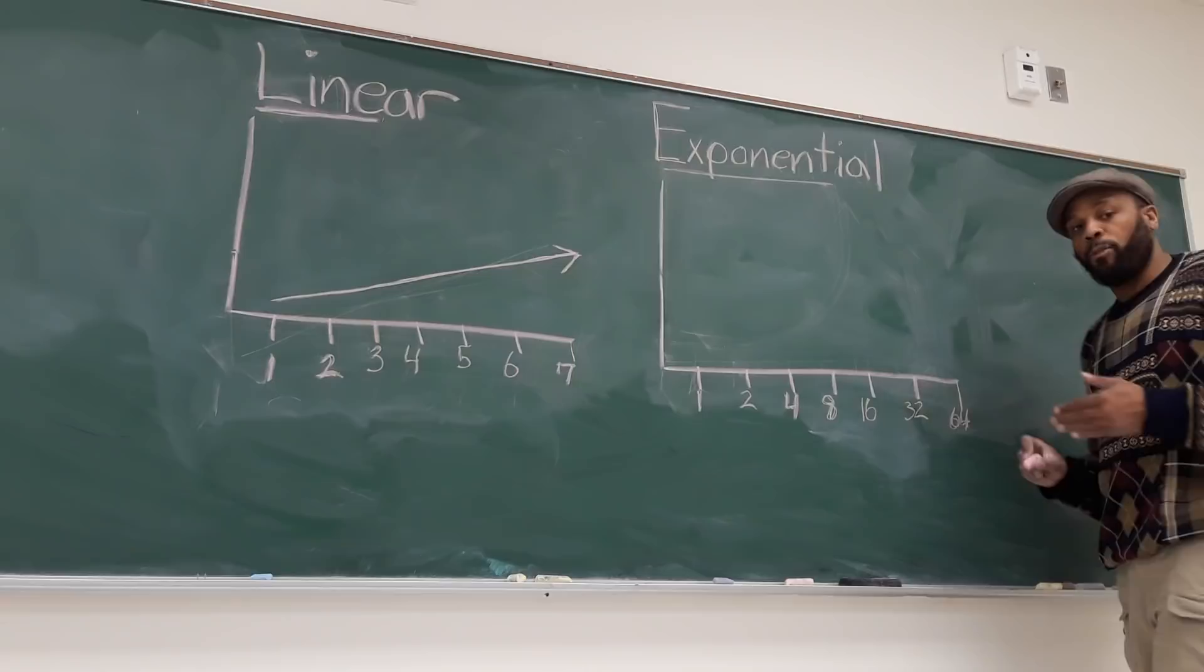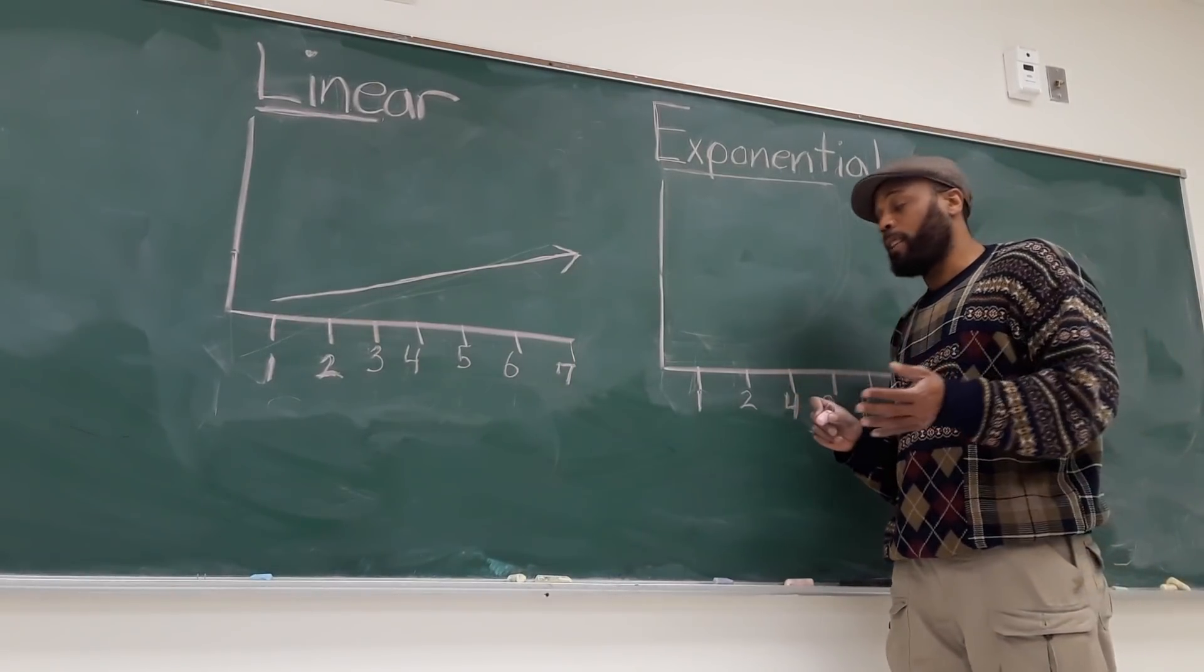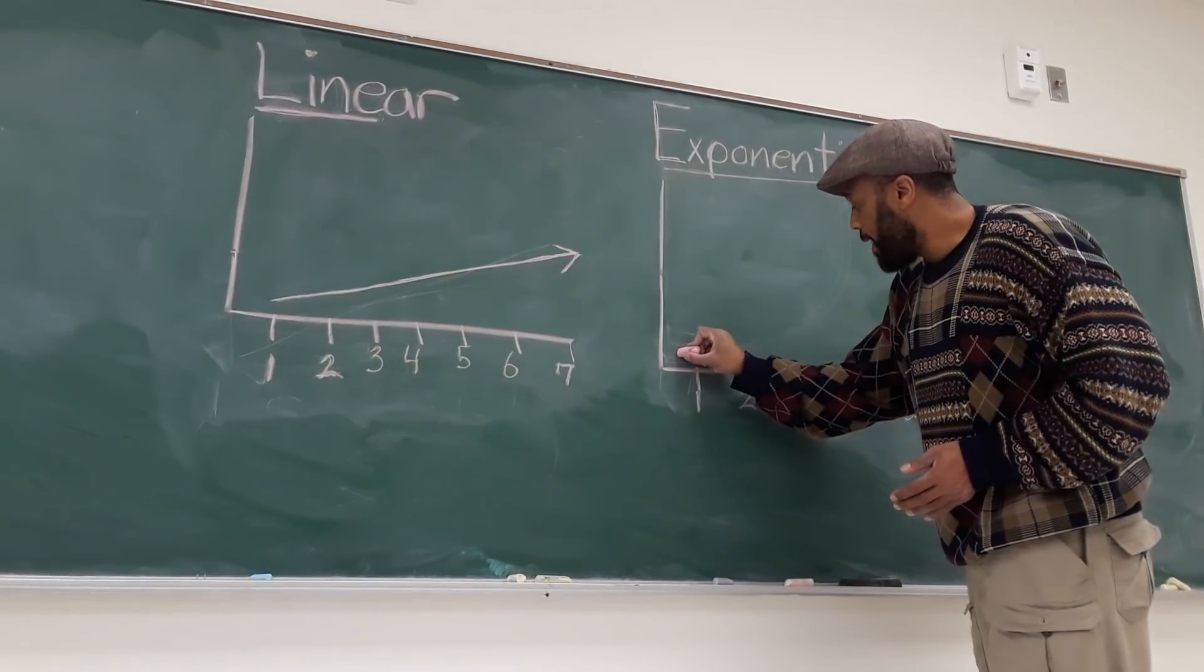That is what an exponential growth model looks like. It's not a straight line. It's not as constant and nor is it as predictable. So if you wanted to draw that, it looks like this.